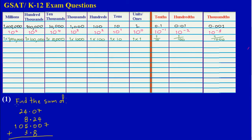The first question asks us to find the sum of 24.07, 8.24, 105.007, and 3.8. 'Find the sum' means to add — whenever you hear the word 'sum,' it means to add. Now some people may be wondering why I have the place value system chart here.